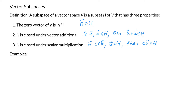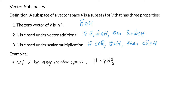So let's take a look at some examples. Let V be any vector space, and let H be the subset of V containing just one element: the zero vector. It turns out that H is a subspace of V. Let's check the three conditions. First, is the zero vector in H? Yes — in fact, the zero vector is the only element in H.